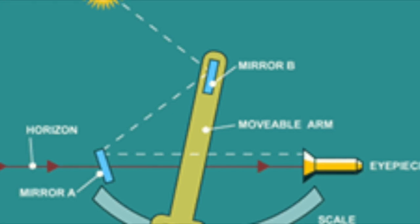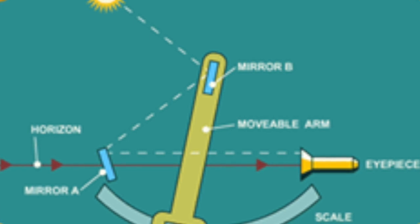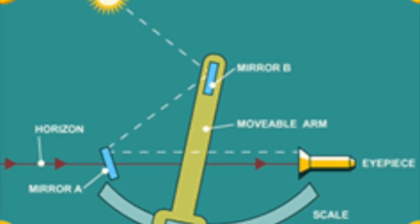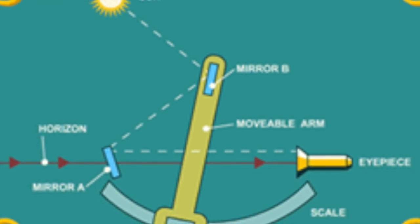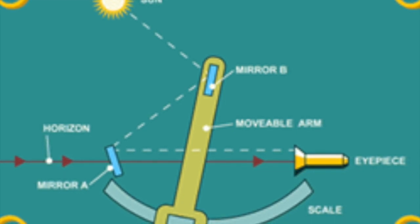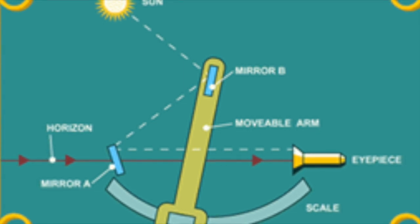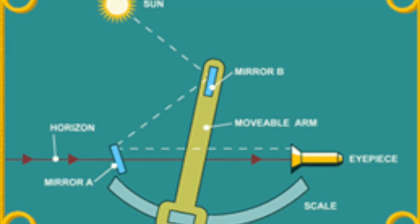With this sextant, one of the mirrors — mirror A in the diagram — is half silvered, which allows some light to pass through it. In navigating, you look at the horizon through this mirror. The other mirror, mirror B in the diagram, is attached to a movable arm. Light from an object, let's say the sun, reflects off this mirror. The arm can be moved to a position where the sun's reflection off the mirror also reflects off mirror A through the eyepiece. What you see when this happens is the object superimposed on the other object — the horizon. The angle between the two objects is read off the scale.